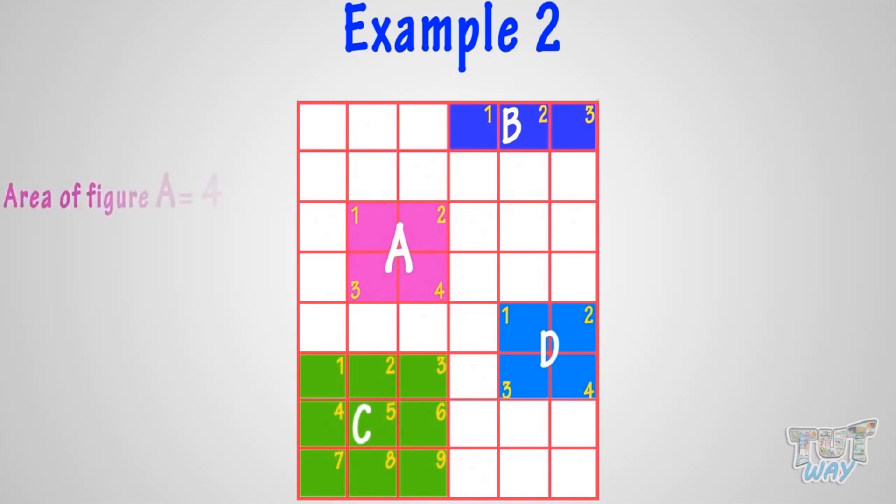Area of figure A is equal to 4 small squares. And now, see which figure encloses the same number of squares?